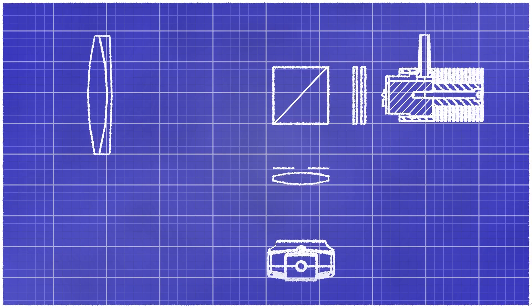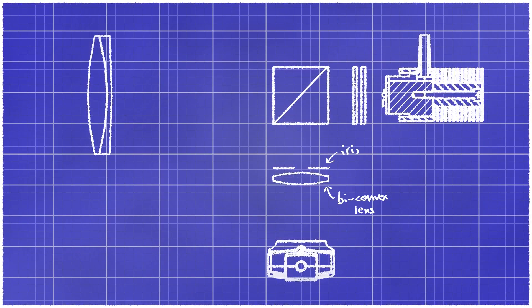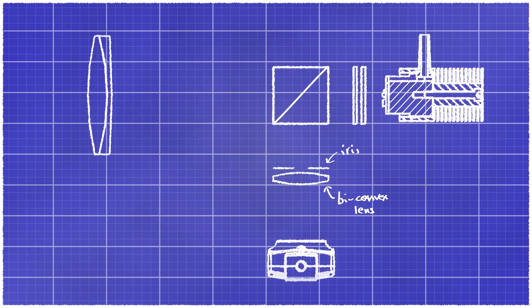To align the setup, I've placed the camera on the other side of the cube beam splitter with a bi-convex lens and an iris. The role of the iris is simply to limit the spherical aberration of the lens and to increase the image quality.